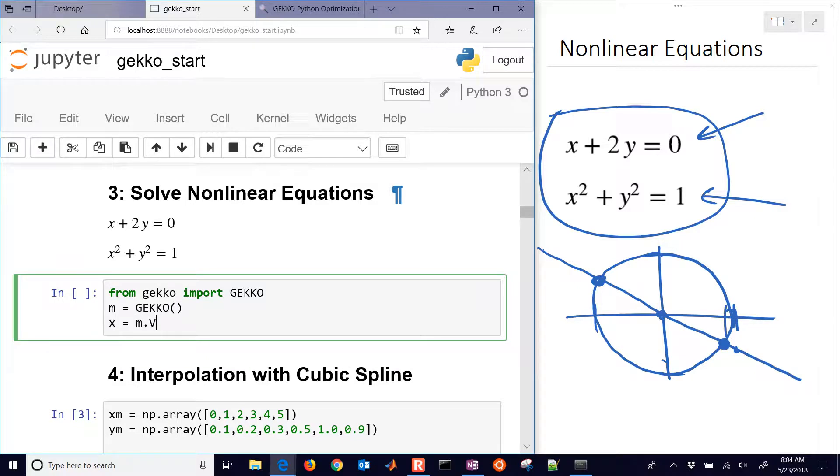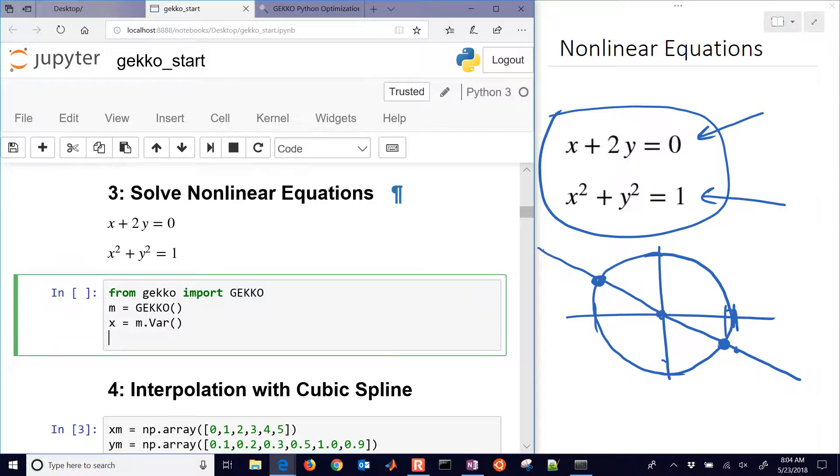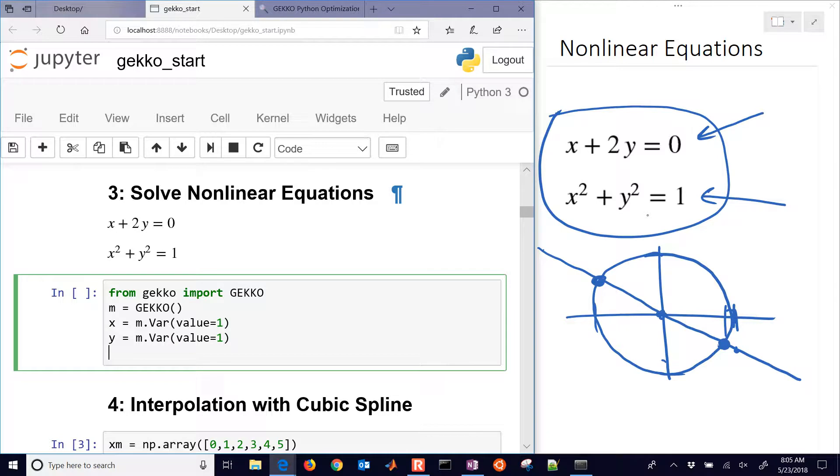x equals m.var, and y equals m.var. You can give them initial values if you'd like. Let's say initial guess is value equals one, and value equals one. You don't have to put those, but you can.